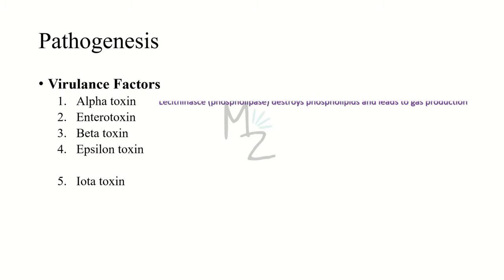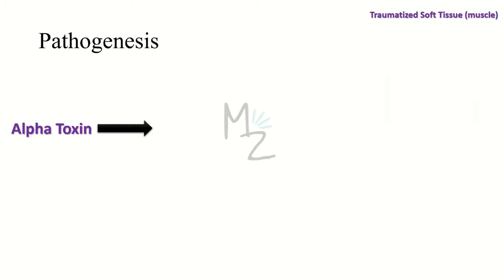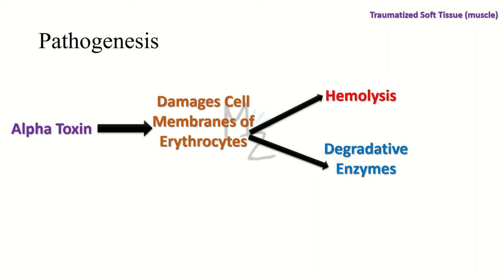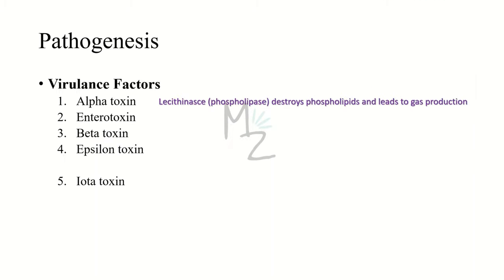Virulence factors. The most important is the alpha toxin — the lecithinase, a phospholipase that destroys phospholipids present in cell membranes. This leads to gas production. The alpha toxin damages the cell membranes of erythrocytes, leading to two important consequences: hemolysis and the production of degradative enzymes responsible for producing gas. Therefore, alpha toxin is responsible for causing gas gangrene, acting on areas where there is compromised blood supply.